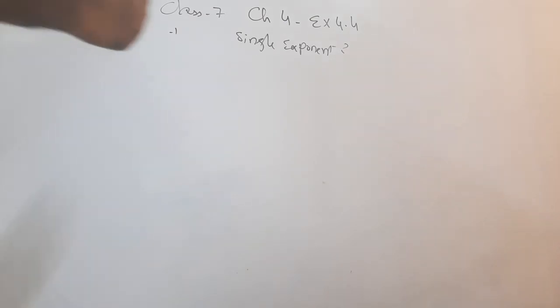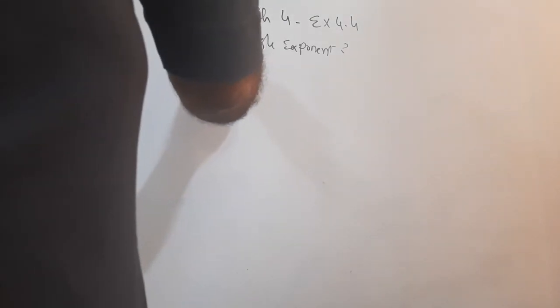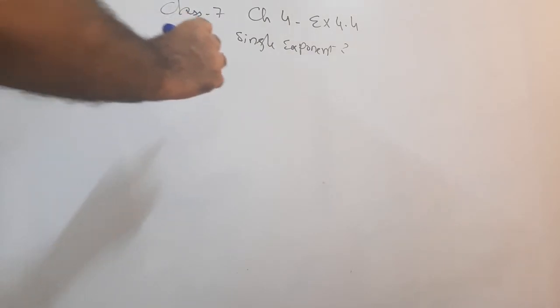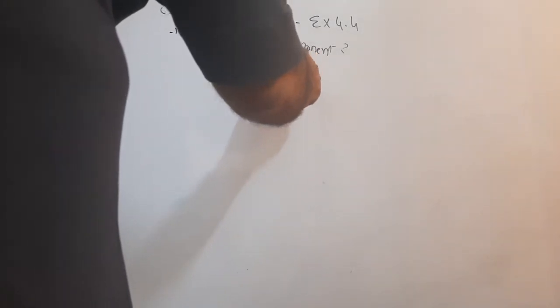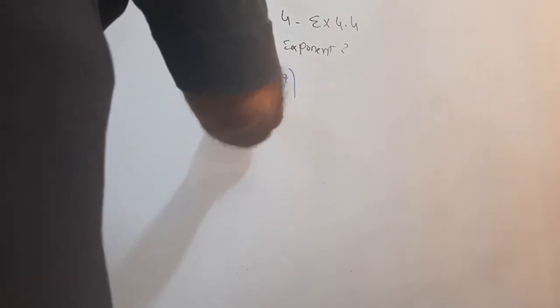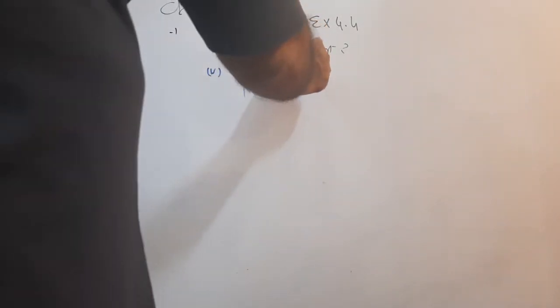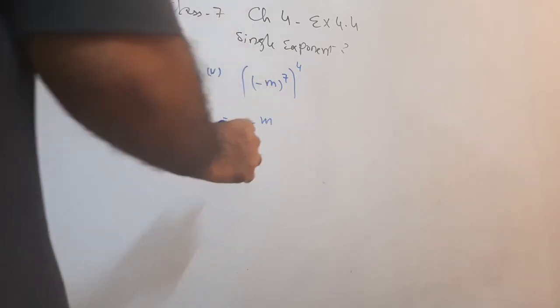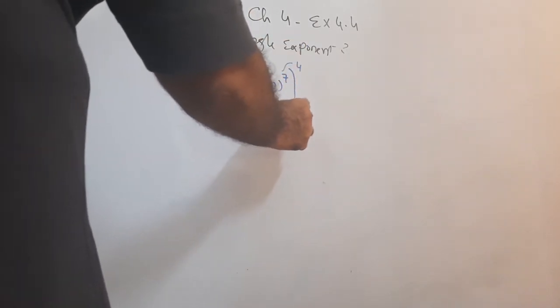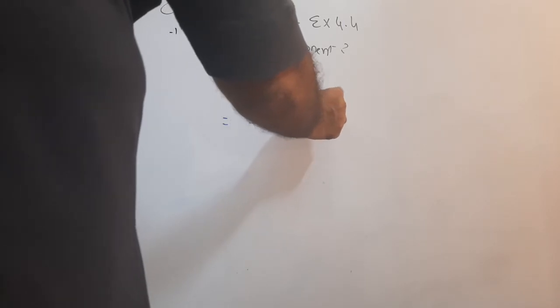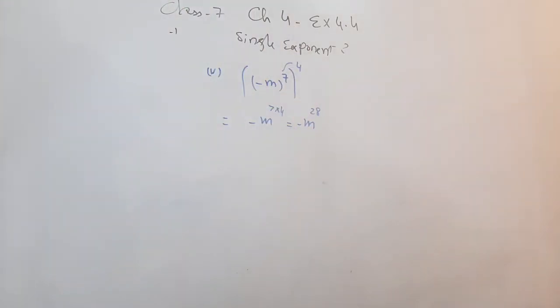Part number 5 is minus m, base power 7, and whole power 4. The exponents multiply: 7 into 4. Minus m raised to power 28. This is the answer for this part.